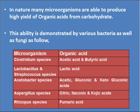There are a number of microorganisms in nature which can produce different types of organic acids from carbohydrates. This ability is demonstrated by various bacteria as well as fungi. For example, Clostridium species can produce acetic acid as well as butyric acid. Lactobacillus and Streptococcus species are able to produce lactic acid. Acetobacter species can produce acetic acid, gluconic acid, as well as ketogluconic acid.